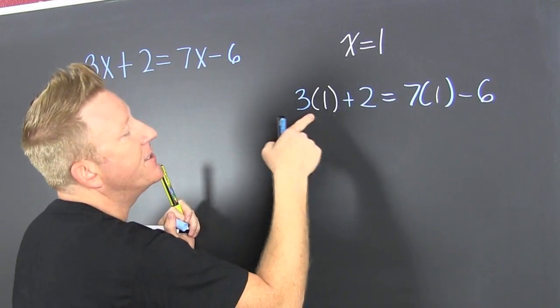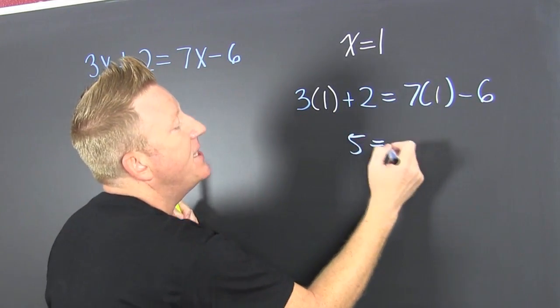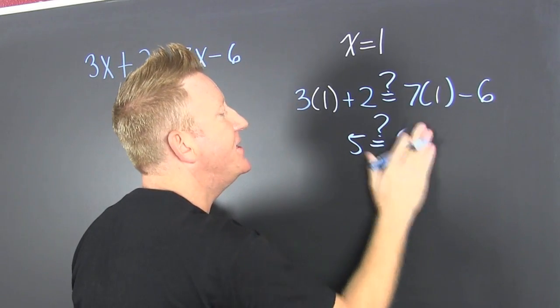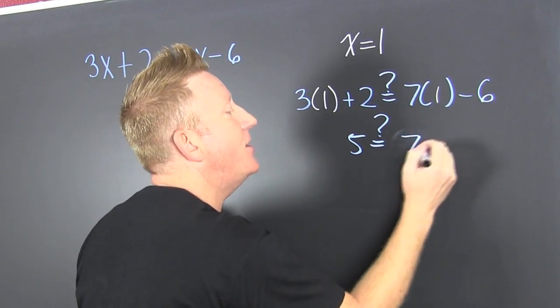So then 3 and 2 is 5. Does that equal, does it, 6? 7 minus 6.